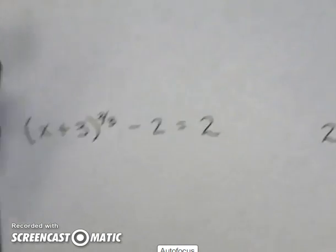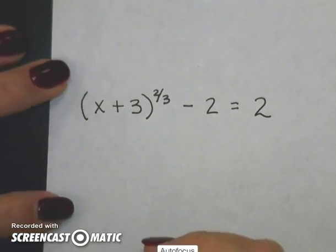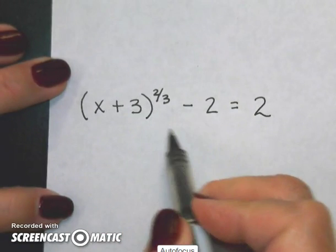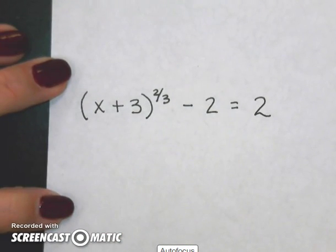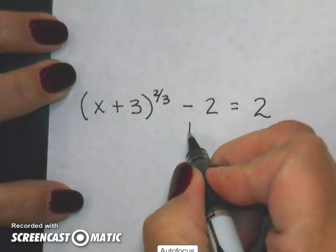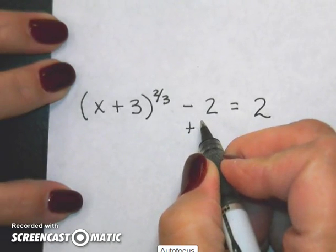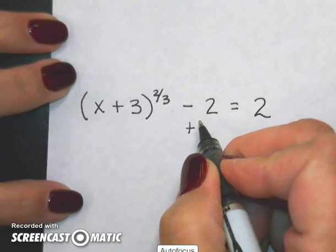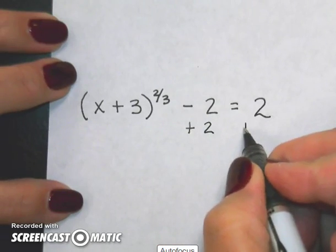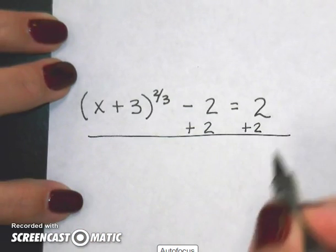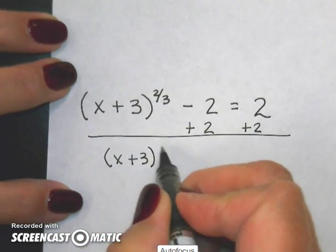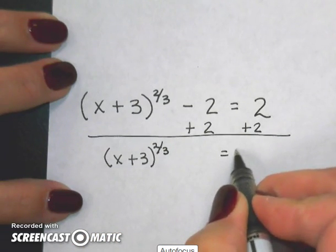Well they can be a little more involved. Okay, so I've got this parenthesis raised to a power, but I've got this minus 2 on the outside of it. Well that needs to be eliminated before I do anything with my powers. So the inverse operation of subtracting 2 is adding 2. So I have x plus 3 quantity to the 2 thirds power is equal to 4.